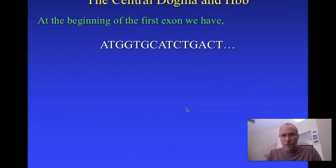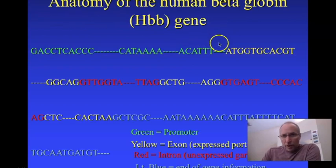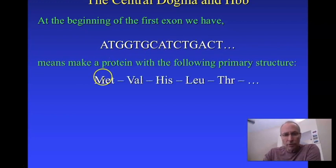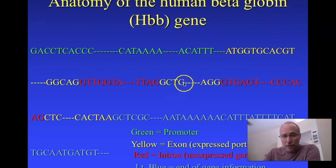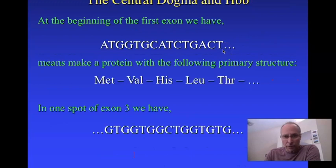So how does it work? Here is the concept of gene expression. Right at the beginning of the first exon, the sequence ATG, GTG, CAC means make a protein with the primary structure: methionine, valine, histidine, leucine, threonine, and so on. That's just the beginning of the first exon; it continues on quite a ways. And in the third exon, the last exon, another sequence means make valine, valine, alanine, glycine, valine.